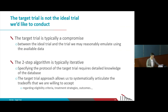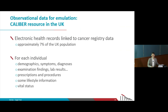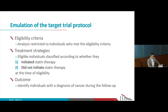In this case, we were using electronic medical records from the UK — the CALIBER resource — to emulate the target trial of statins and cancer. It covers about 7% of the UK population, with lots of data typical of medical records. Using that observational data, we emulated each component of the target trial. The first component was the eligibility criteria: we had to find people in the data who meet the eligibility criteria.